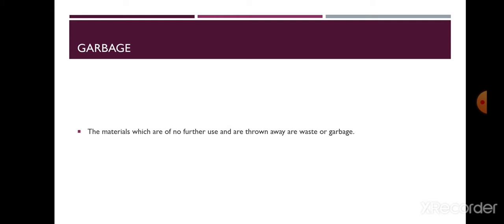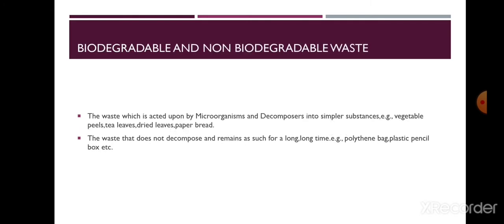So what is garbage? The materials which are of no further use are known as garbage or waste. All kinds of garbage can be categorized into two categories: biodegradable and non-biodegradable. The basis of categorization is simple — waste material which can be acted upon by microorganisms. These are minute organisms that can eat waste materials and convert them into manure for the soil. Waste material that can be degraded by these microorganisms is called biodegradable.